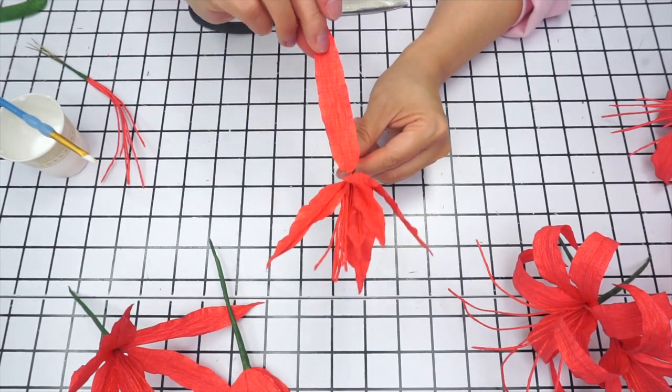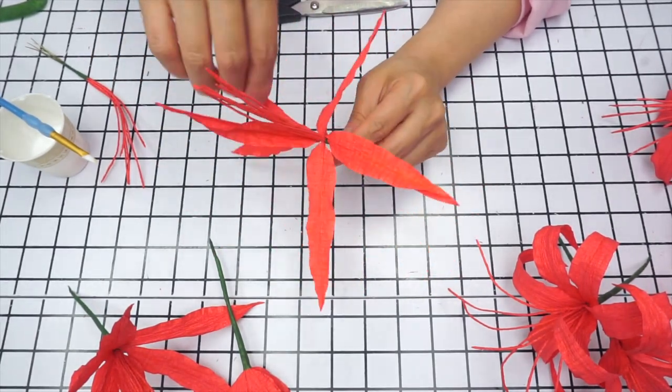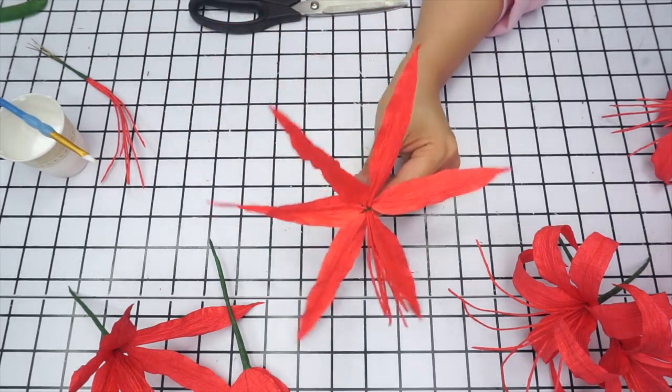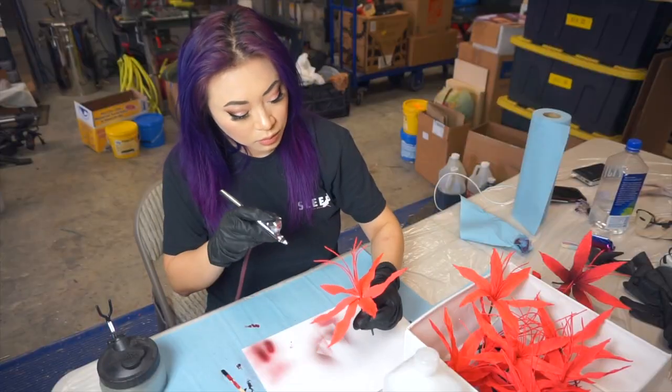Now you can open up the flower and adjust the petal placement evenly around the stem. See, it's starting to look like a flower.